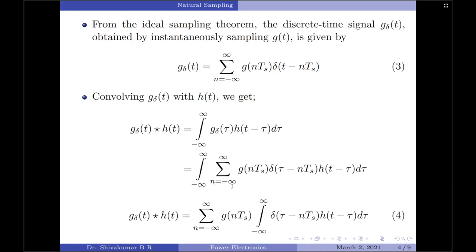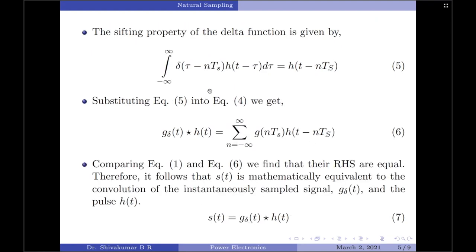After simplifying, we get summation over n of g(nTs) times the integral of delta(tau − nTs) times h(t − tau) d_tau. This integral can be simplified using the sifting property of the delta function, given by: the integral of delta(tau − nTs) times h(t − tau) d_tau equals h(t − nTs). This is the sifting property of the delta function.